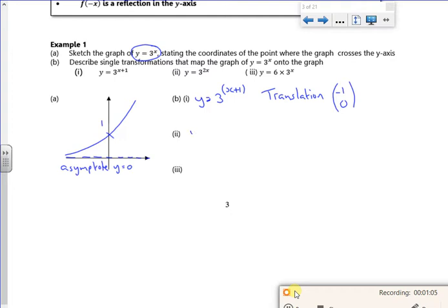So y equals 3 to the power of 2x. So I've replaced the x with the 2x. So that must be a stretch parallel to the x-axis scale factor. Now if you remember, on the x-axis you do it upside down. I'm cramming twice as much graph into the same area, so I have to plot it half as far away from the y-axis.